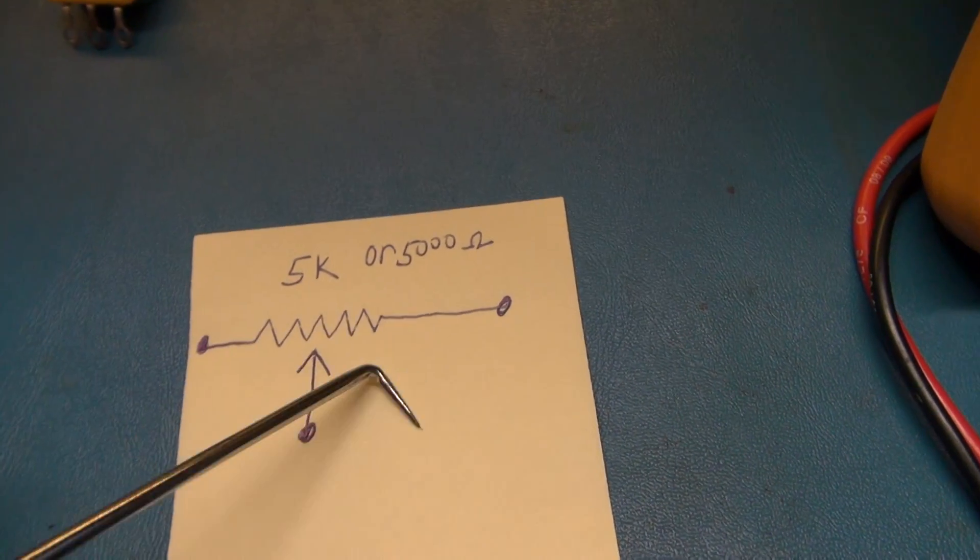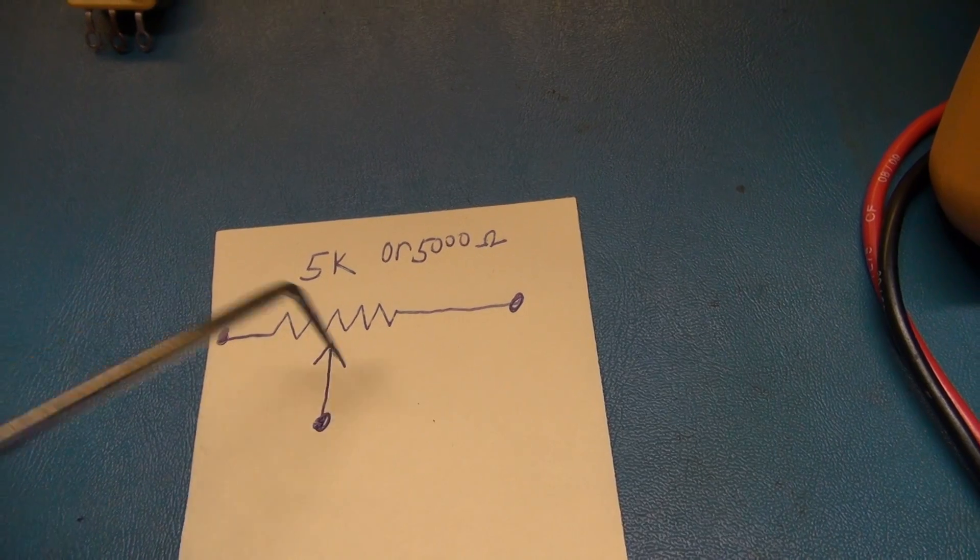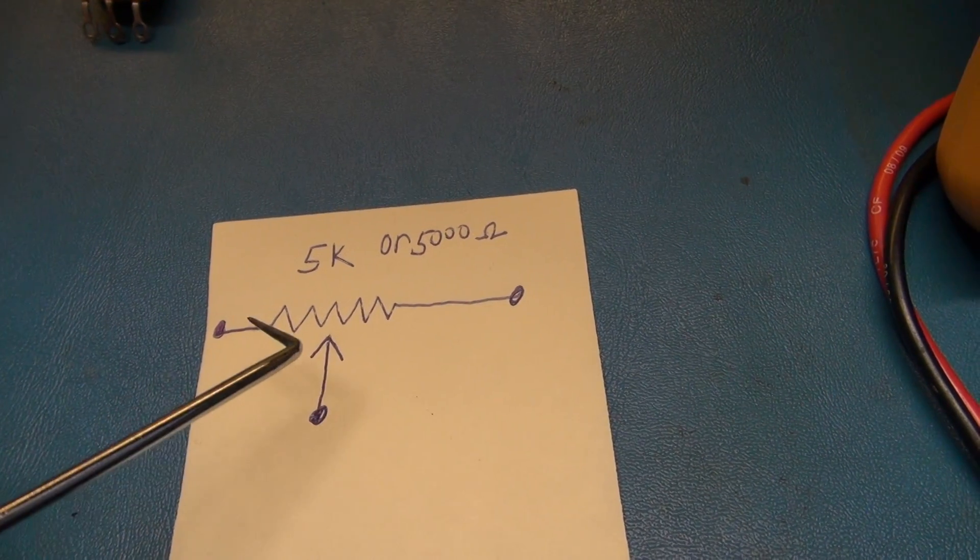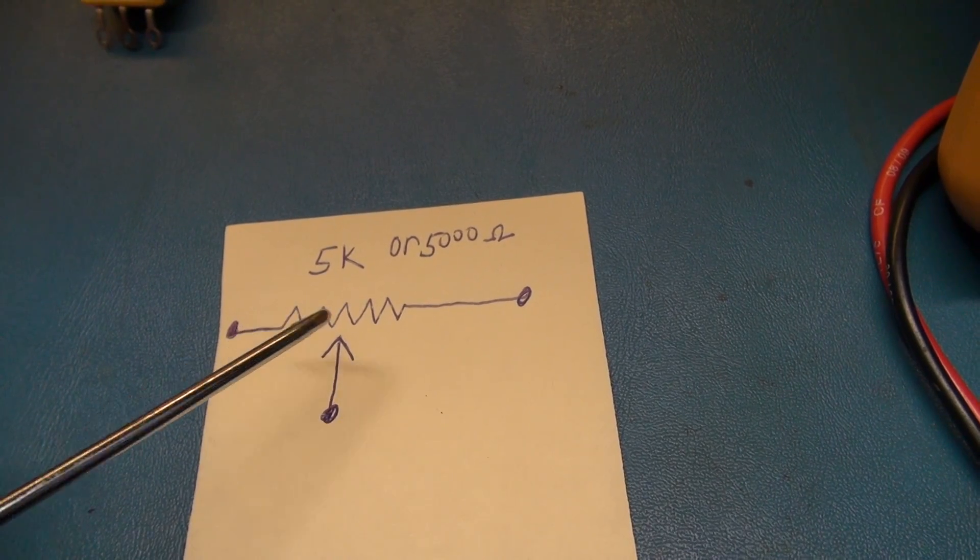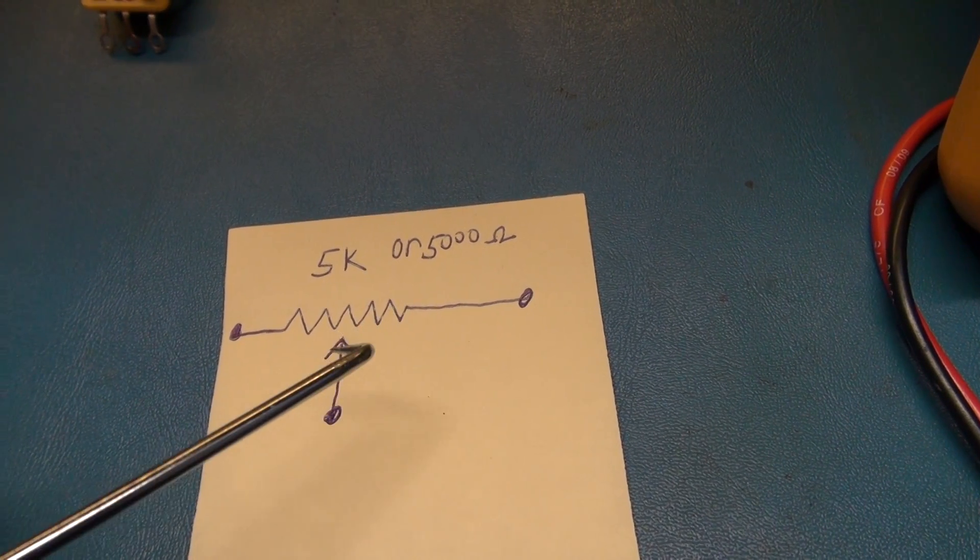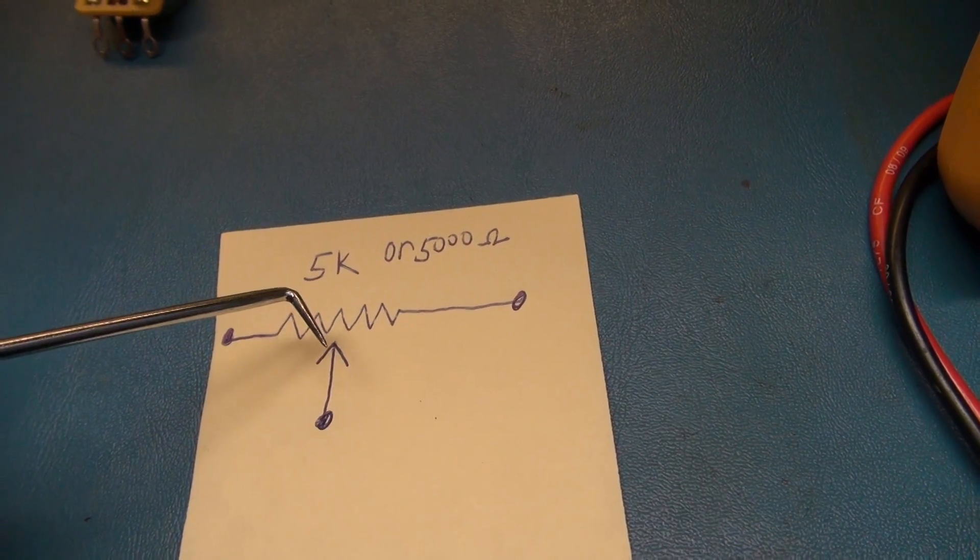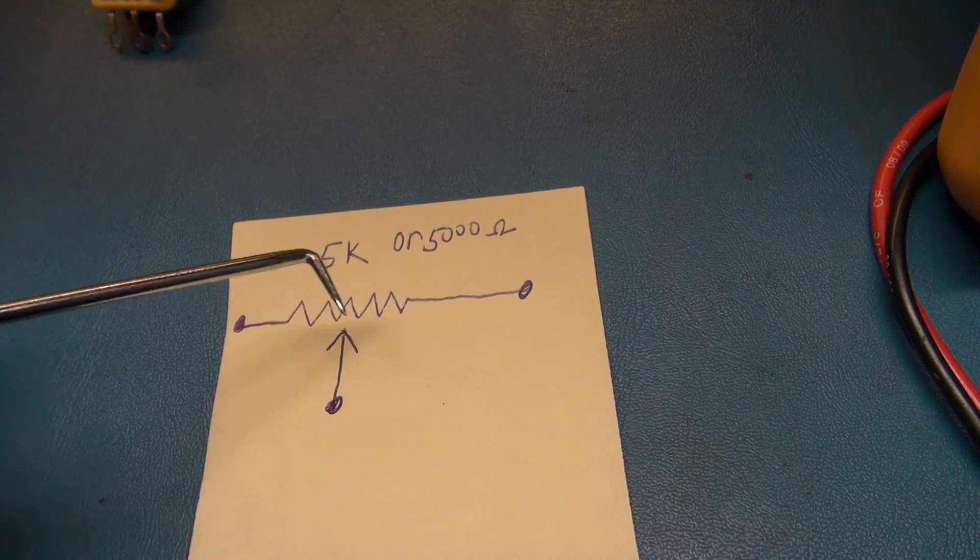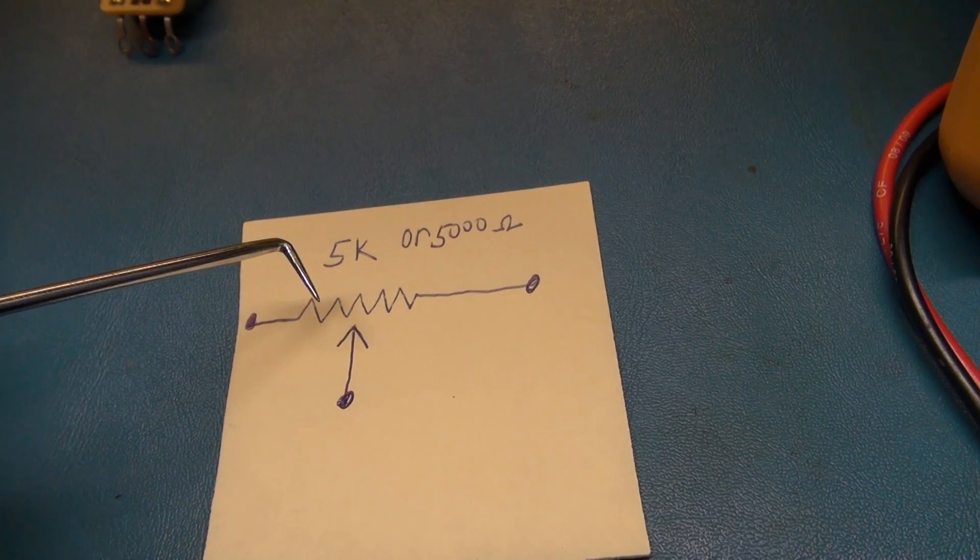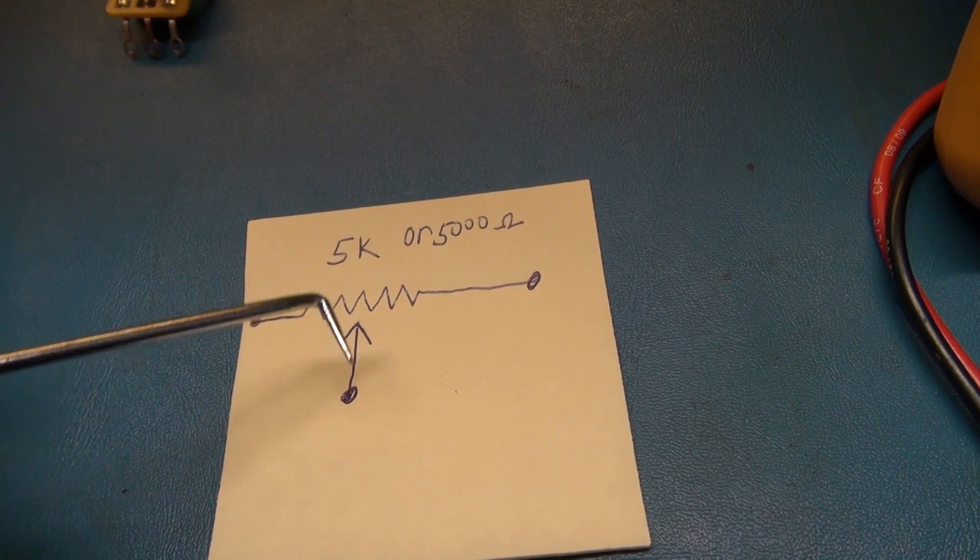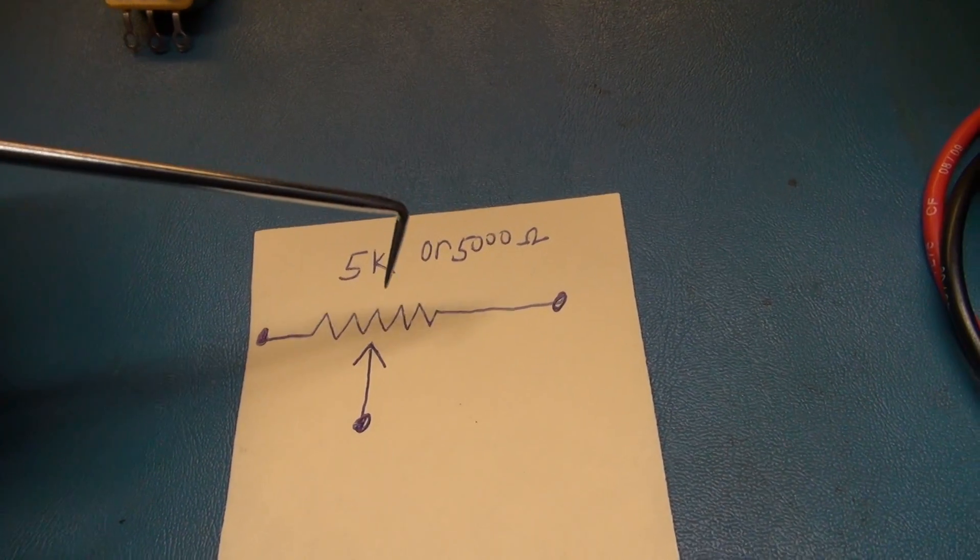You're going to see this in schematic diagrams a lot. A potentiometer is nothing but a resistor with a wiper. The wiper will change resistance, so if the wiper moves along the resistor, it's going to change resistance between any of these three points.